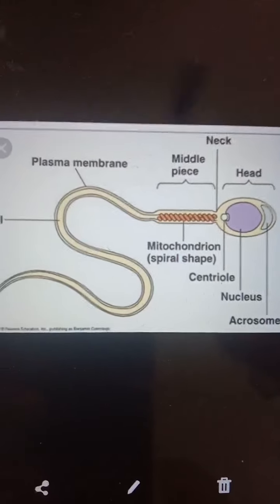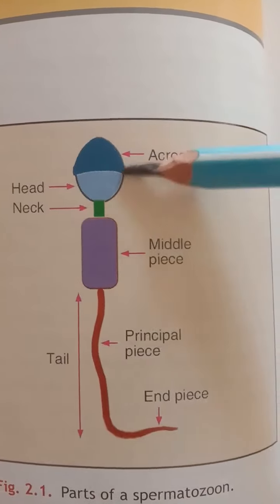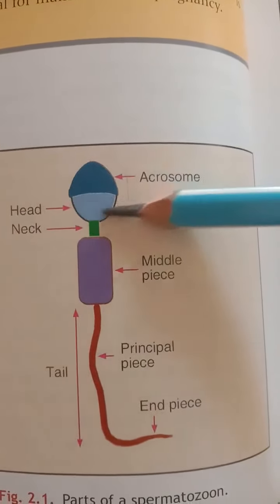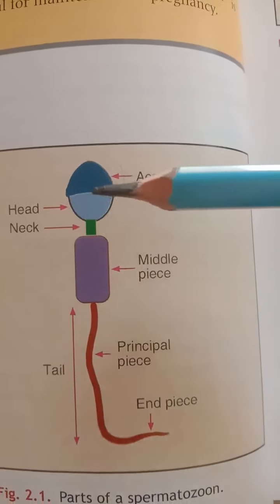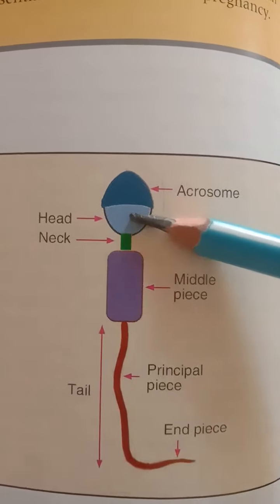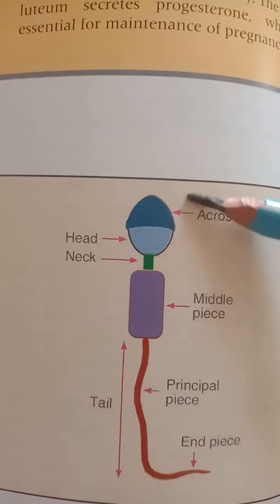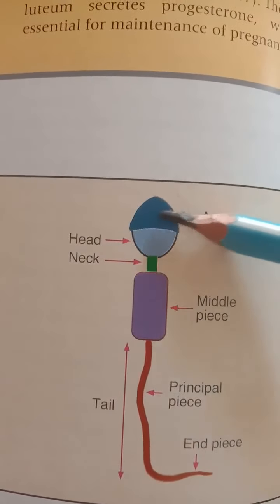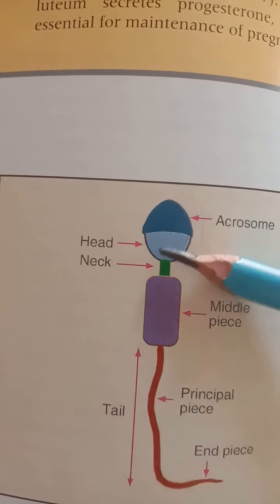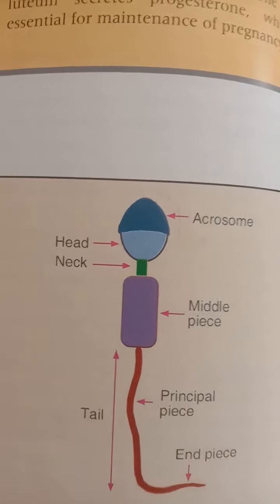Let's see the detail of the structure of the sperm cell. The head of the human spermatozoa is piriform in shape and measures about four microns in length. It is derived from the nucleus which consists of 23 highly condensed chromosomes. The head is covered by a cap-like structure called the acrosome or acrosomic cap. The acrosome consists of enzymes that help with penetration of the spermatozoa into the ovum during fertilization.